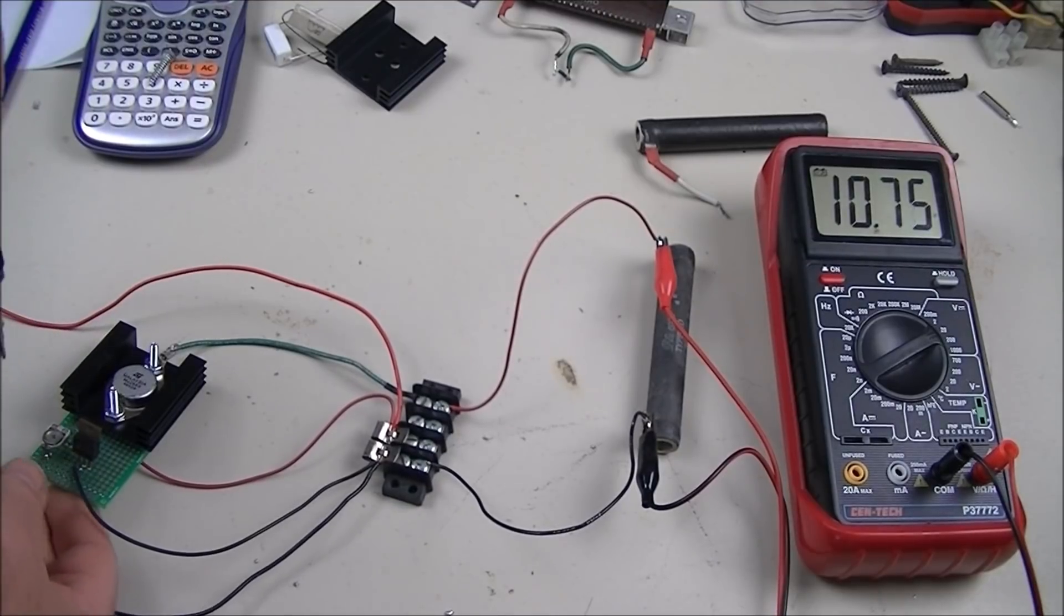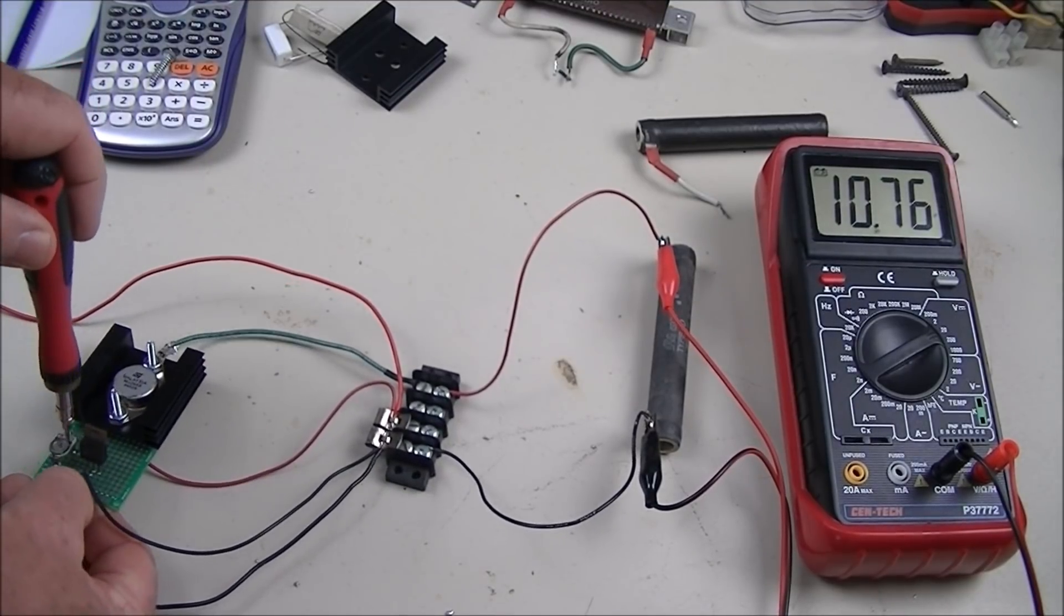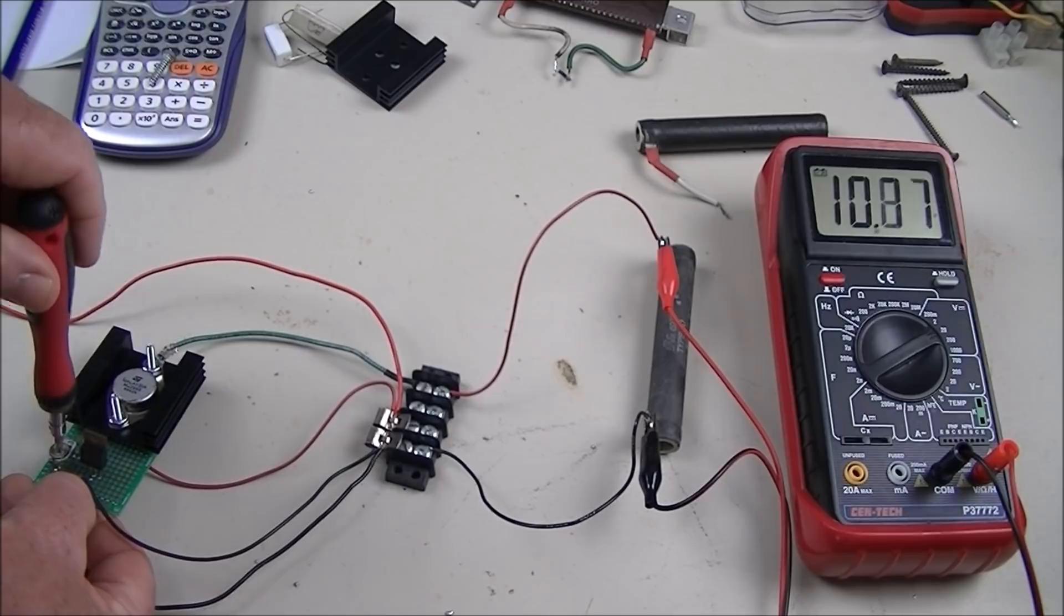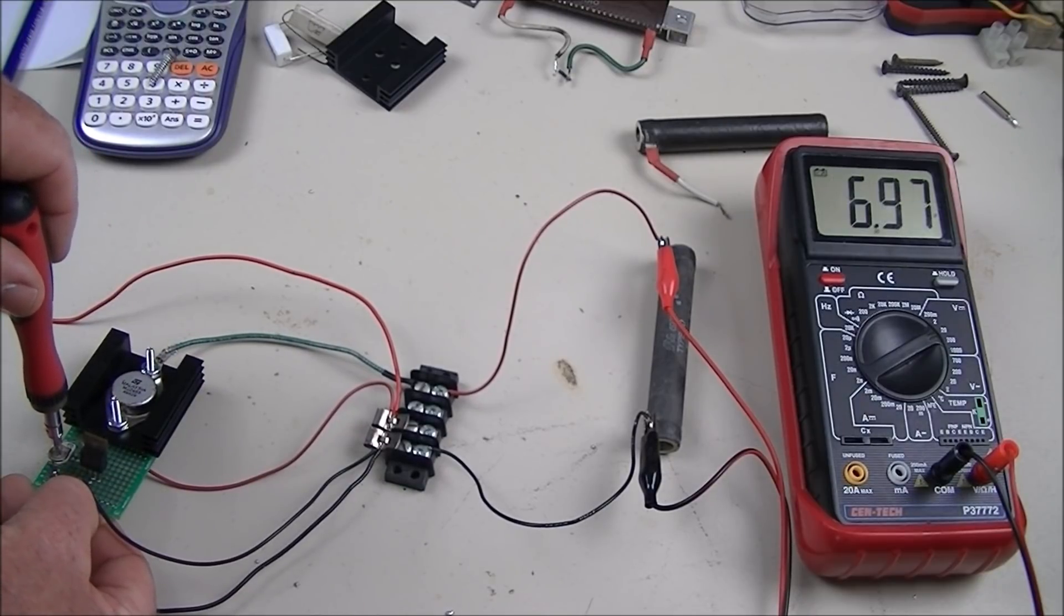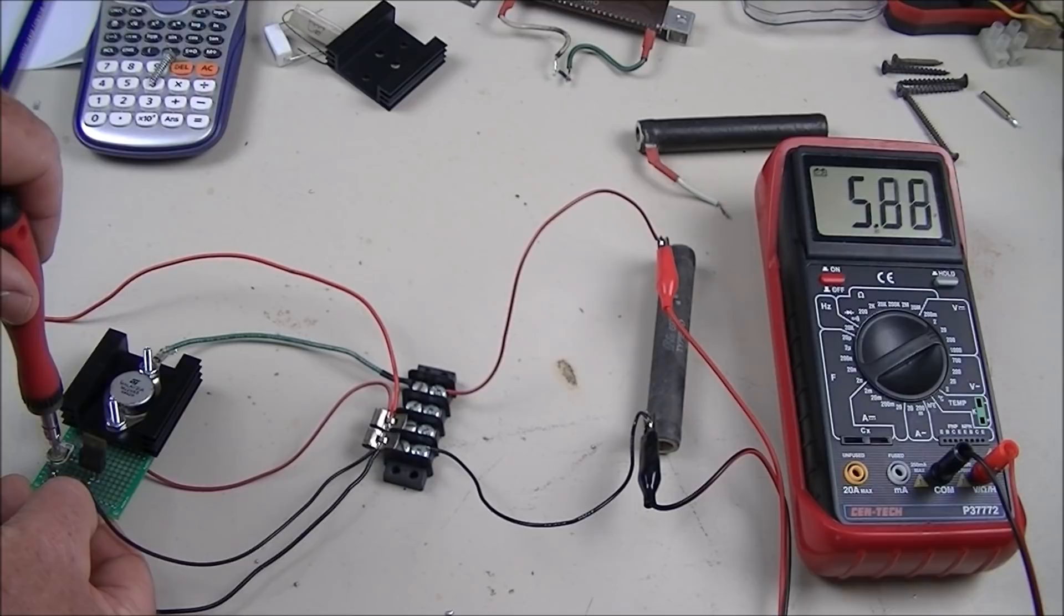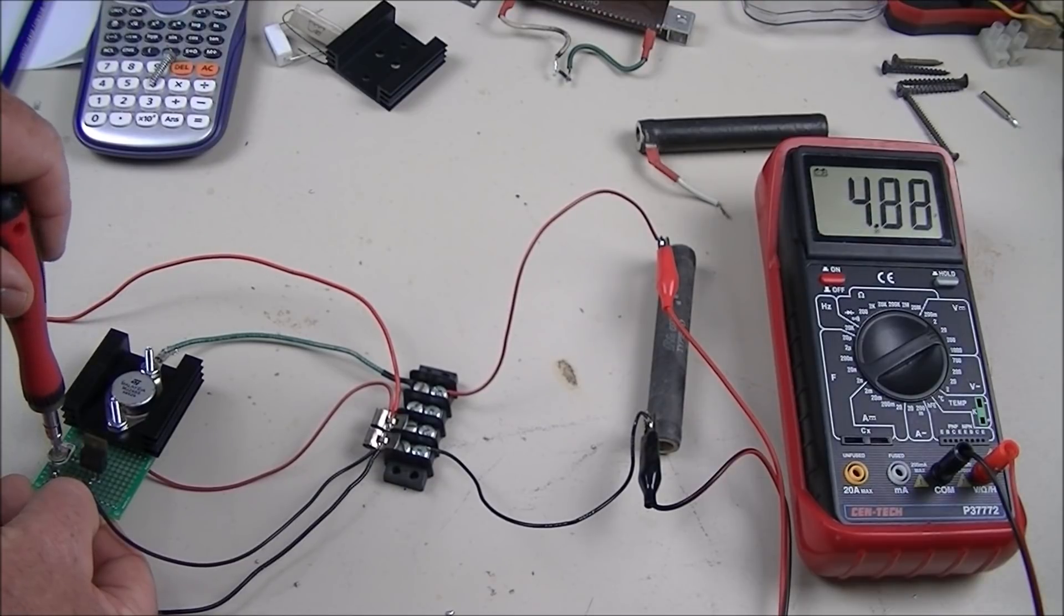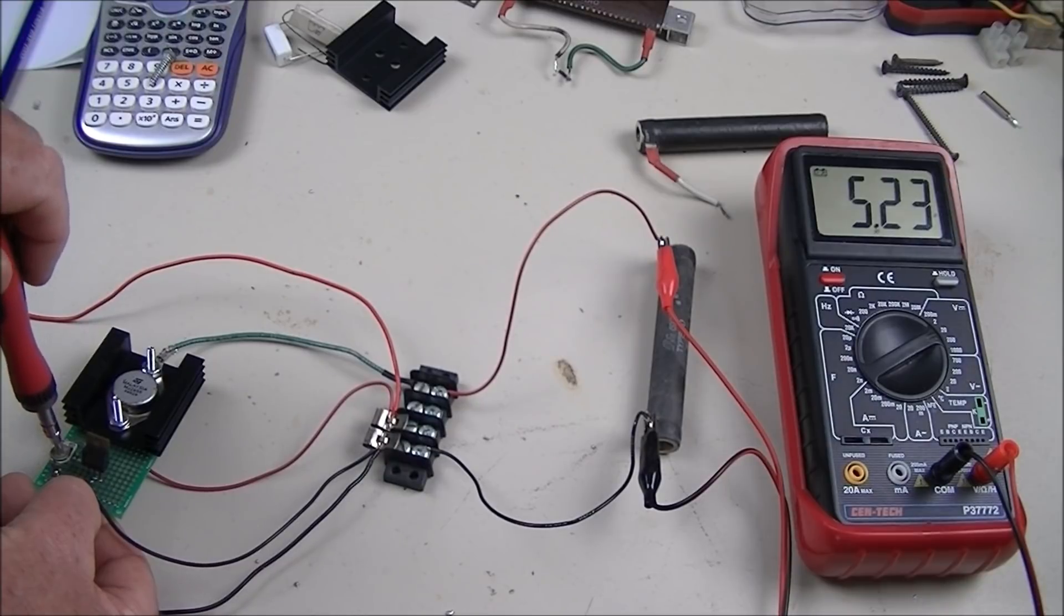Let's watch the meter as I adjust the current. Now I've dropped the current to approximately half an amp.